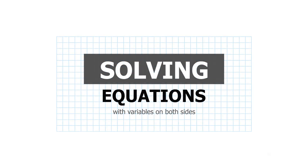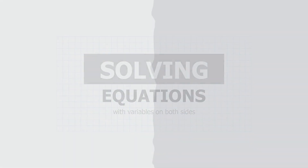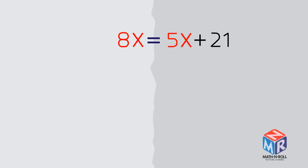Solving equations with variables on both sides. Let's try an example: 8x equals 5x plus 21. To solve, we need to collect the variable terms on one side of the equation and all of the constant terms on the other side.